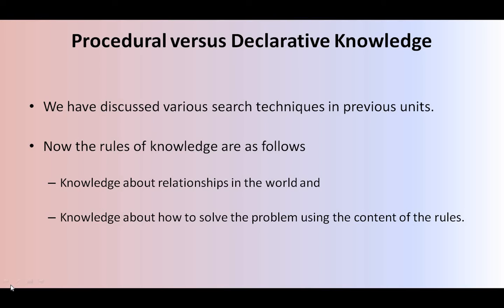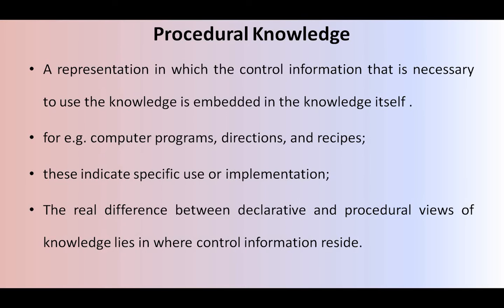We are going to see what are the rules and regulations of the knowledge. Next we are going to see knowledge about relationships in the world and knowledge about how to solve the problem using the content of the rules — that means how the relationships will be there in the knowledge, how one thing is related to another thing, and how to solve the problem using this set of rules. All these things we are going to represent using procedural and declarative knowledge.